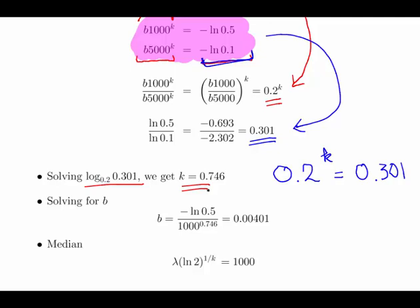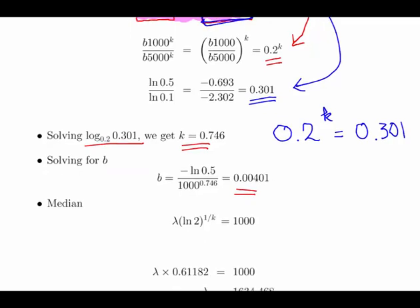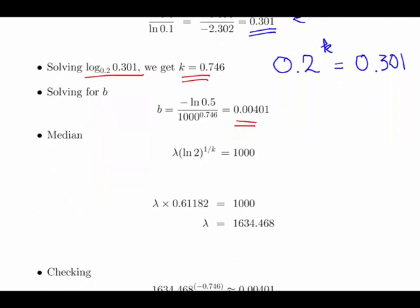Now based on that, what we can do is solve for b using one of those expressions there. b is equal to minus log of 0.5 divided by 1000 to the power of 0.746, and we should get an answer of 0.00401. Now actually for the most part that would be a sufficient answer.